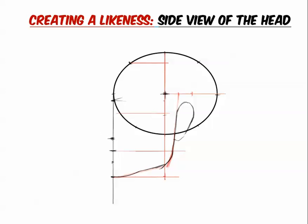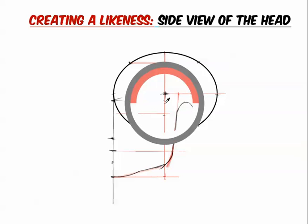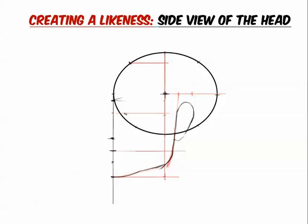Now we're going to place the nose. Take the eye line and divide it in half — that's basically where the turn is that you find at the bridge of the nose. So that's where it'll turn. You can use this from the front view too, but it's more important when looking from the side. It's not always exact, but we'll put that in there.